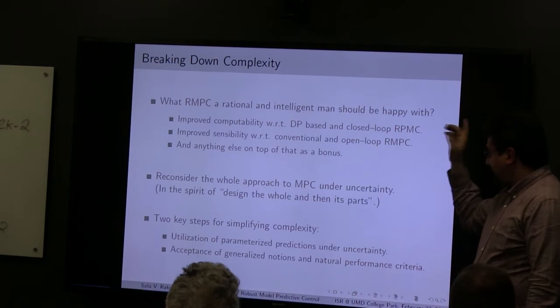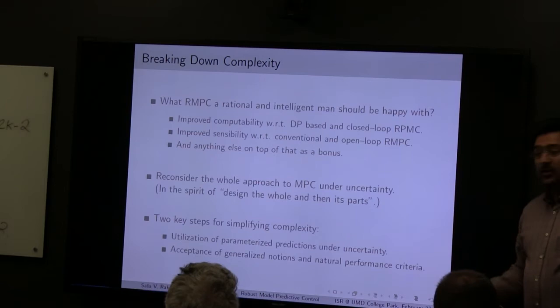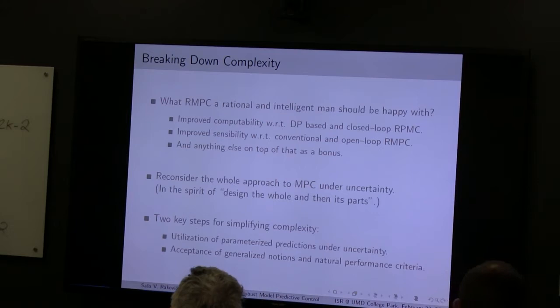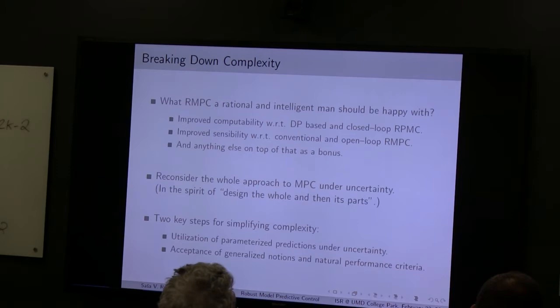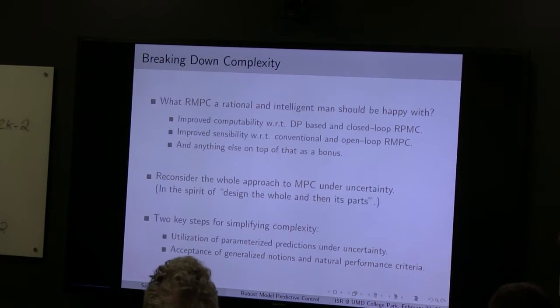How do you achieve this? There are essentially two ways. One is what has been done so far, and there is a likely new twist — essentially reconsidering the whole approach to MPC: design the whole rather than its parts. Model the uncertainty in such a way that it is part of MPC — don't do it separately. If you want the sum of the parts to be the whole, design it top-down, not bottom-up. The key that enabled breaking down the complexity was utilization of parameterized predictions of states and controls.